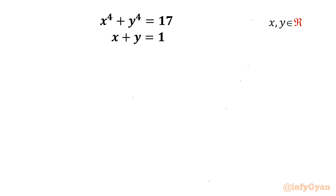Welcome back to Infigyan, my dear friends. Today in this video we are going to take up one very interesting system of equations. We have x⁴ + y⁴ = 17 as the first equation, and x + y = 1 as the second equation, where x, y belong to real numbers. I will showcase two methods to solve this problem.